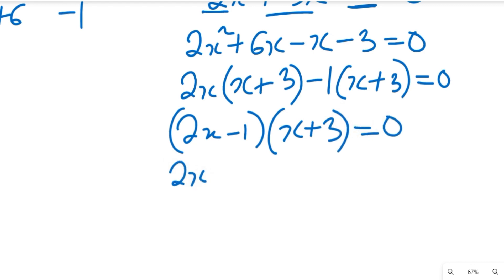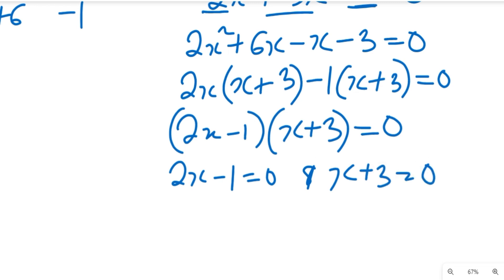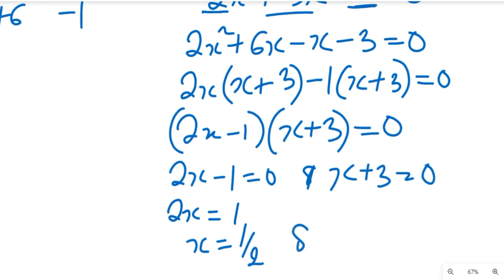So we have two terms here: the first term is 2x minus 1, and the common term x plus 3, both equal to 0. So 2x minus 1 equals 0, as well as x plus 3 equals 0. If we simplify this we're going to have 2x equals 1, and then x equals 1 divided by 2, and then we'll also have x equal to minus 3.